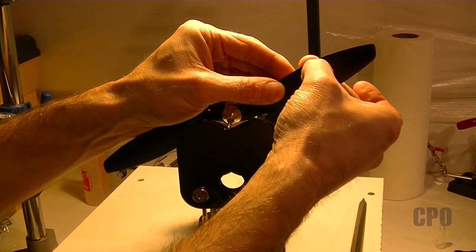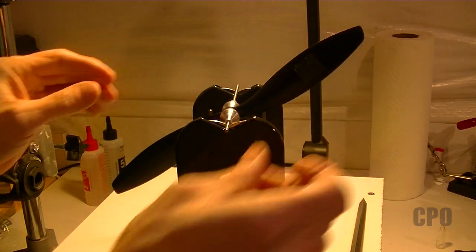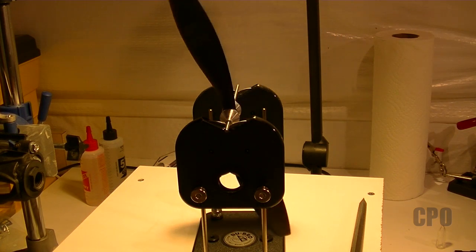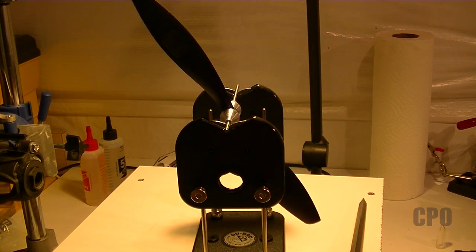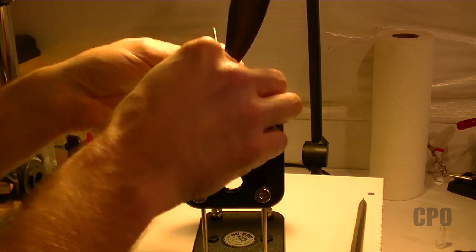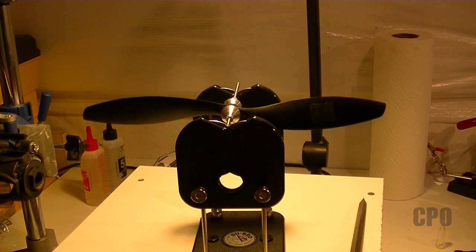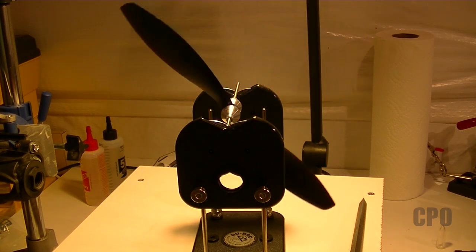I've also found, and you'll see that later in this particular prop balancing, that sometimes when I add weight to level out the blades, then I do the work on the hub, I find that I end up having to remove some of that weight off the blades because the hub does come into play here. But for now, I just want to get the blades as equal as I can and then figure out where the hub challenge is.